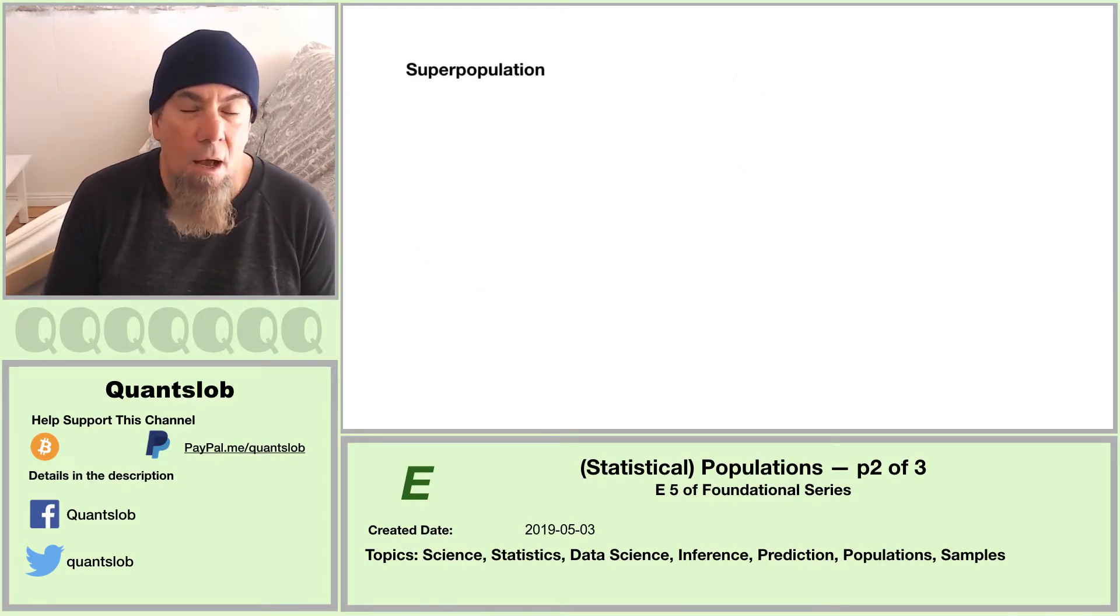The statistician William Cochran coined the term superpopulation, I believe, in the 1940s, and as is commonly the case with language, the term has morphed since then.